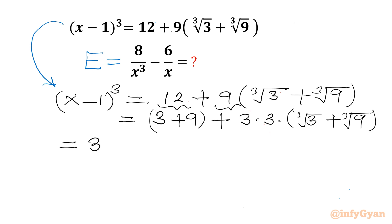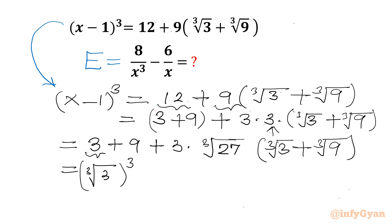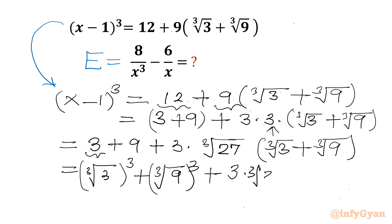In the next step I write 3 plus 9 as it is, plus 3 times cube root 27. Cube root 27 is 3. Then we have bracket cube root 3 plus cube root 9. Now I can write 3 as cube root 3 whole cube, and 9 as cube root 9 whole cube. Then 3 times the factors of 27: cube root 3 times cube root 9. Then we have bracket cube root 3 plus cube root 9.